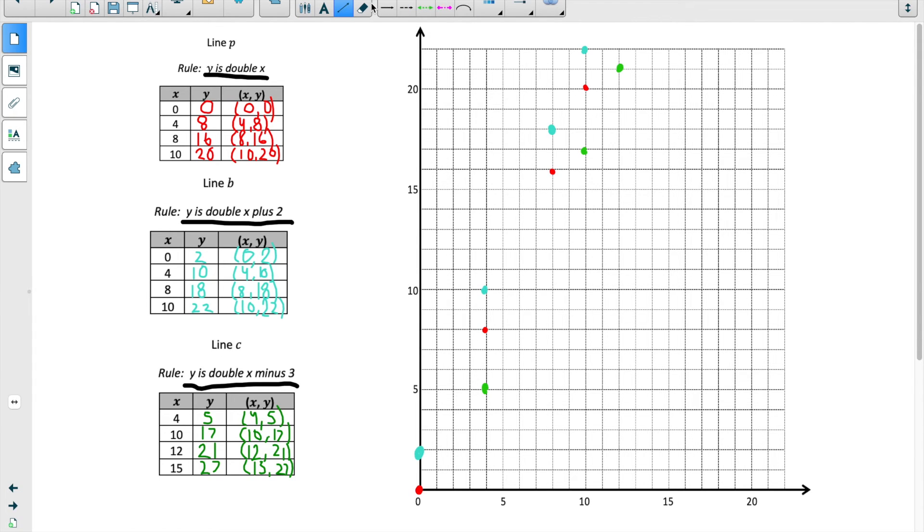Watch and you'll see. So I'm going to draw my line for y is double x. I'm drawing the line. I already made the points, and I'm just putting the line through. Now I'm going to draw my line for y is double x plus 2. You can see I already put the coordinates and the coordinate pairs. I plotted the points, so I just want to connect them. And now I'm going to draw my line for line C, y is double x minus 3. Let me go ahead and label these lines while we talk about it. So here is P, B, and C.